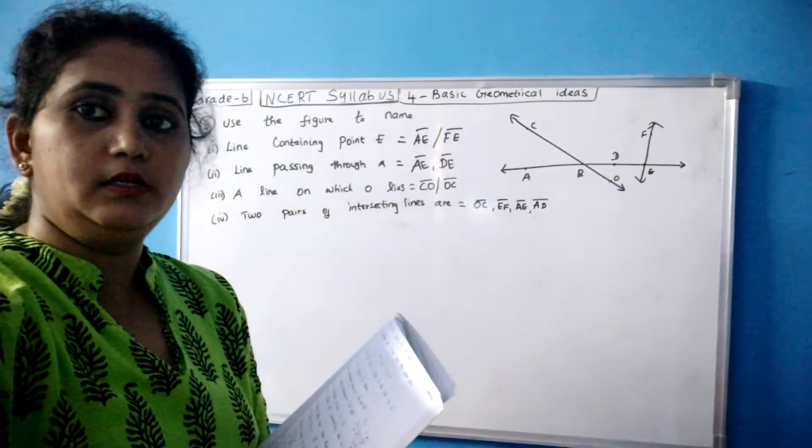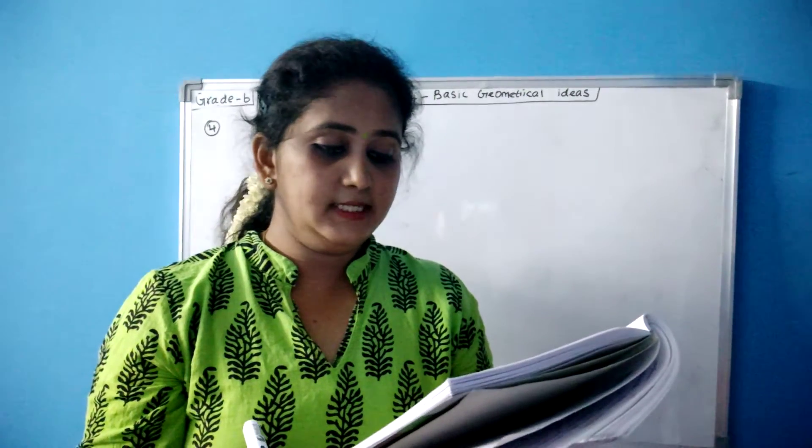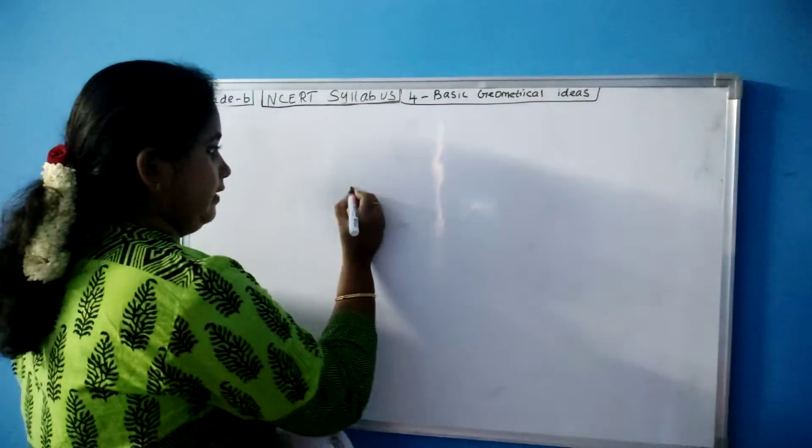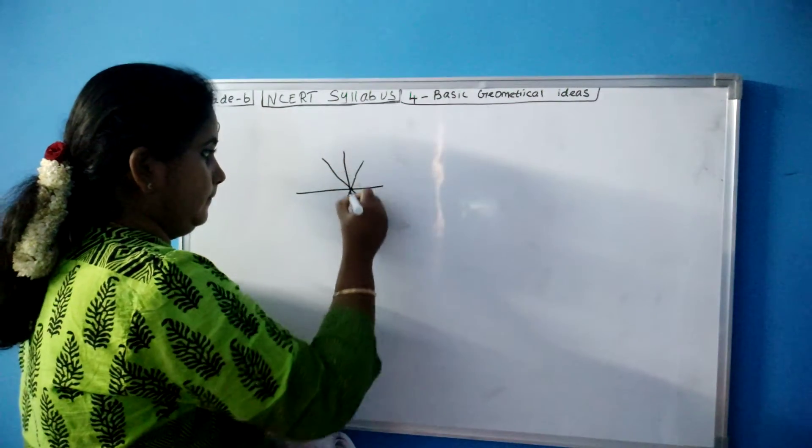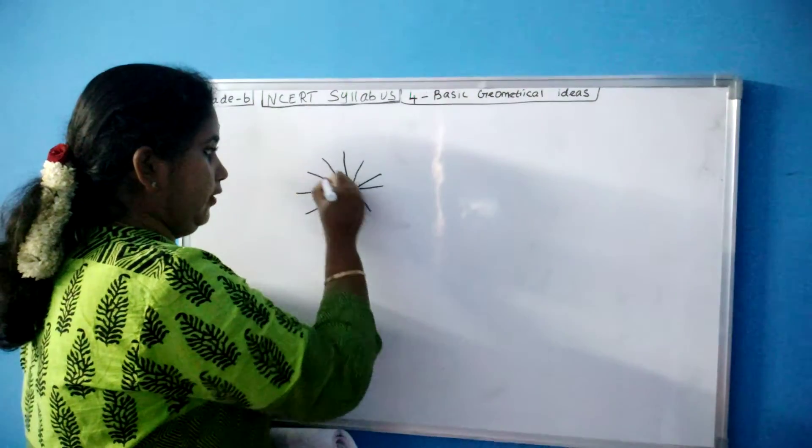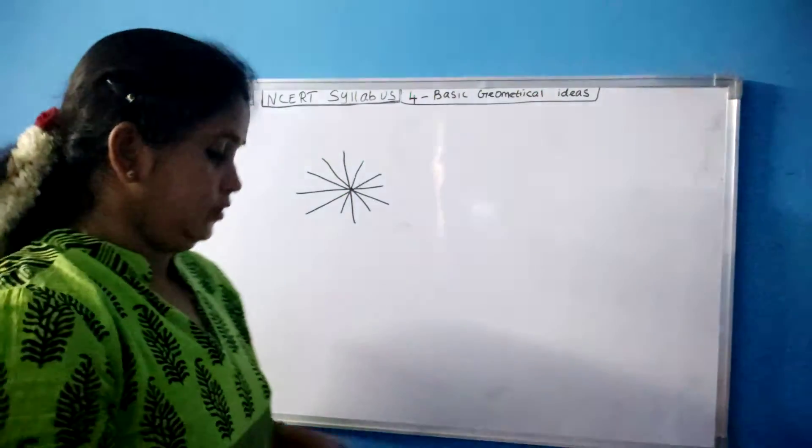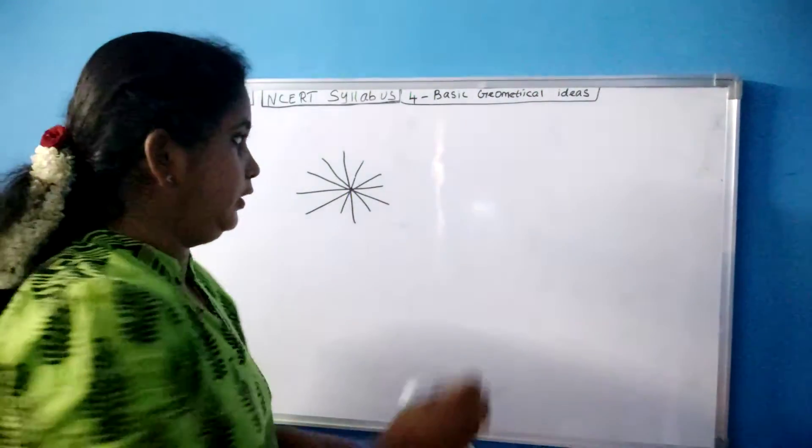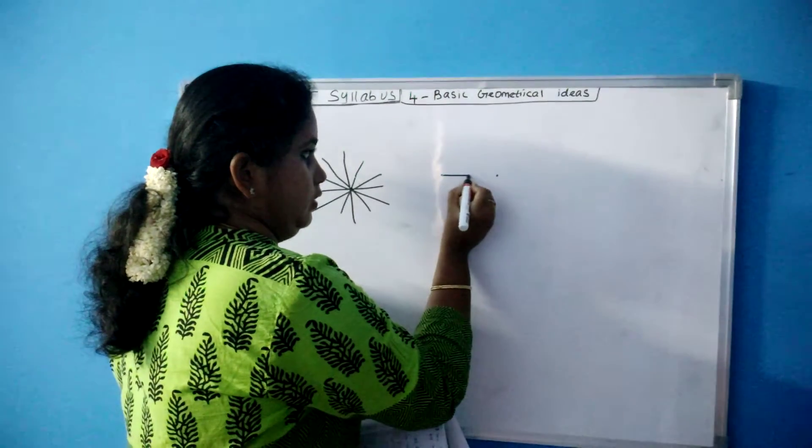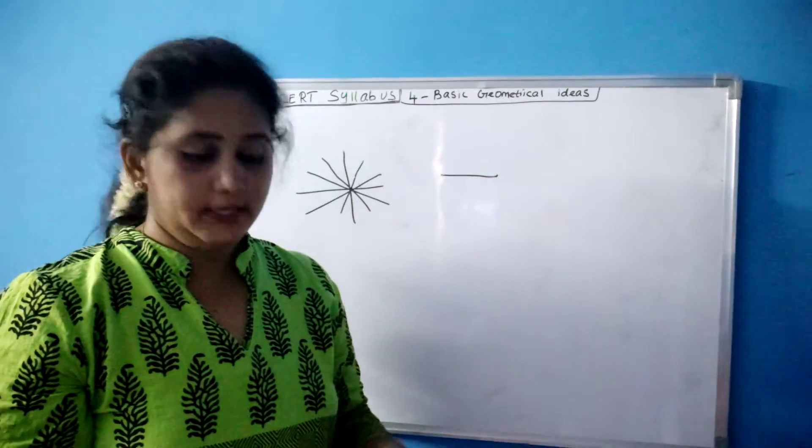So next question is like one word. I will just read it out to you. How many lines can pass through one given point? So one point is given, how many lines can pass through? You are going to draw the lines and then keep on drawing lines. So infinite lines can pass through one given point. Your next question is under this two given points. In two given points, how many lines can pass through? Only one line can pass through in two given points.